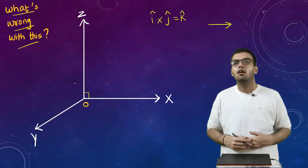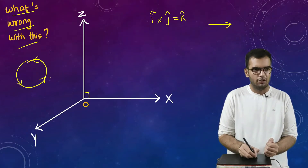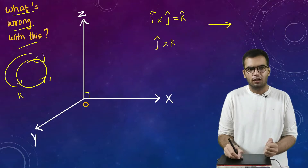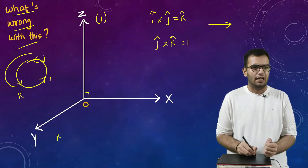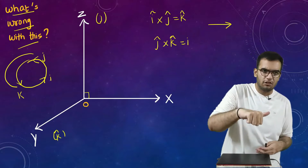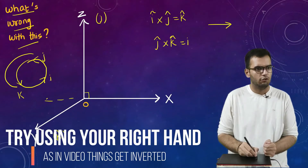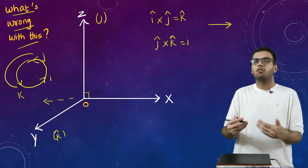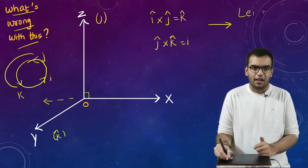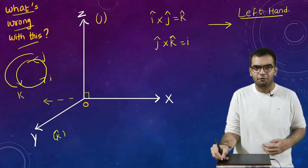Similarly, in the way we draw in India — i, j, k — if I take j-cap cross k-cap, it should give me i-cap. So this is my j-cap, this is my k-cap. Going in this direction, i-cap should point this way, meaning the x-axis should be in this direction — but it is not. So coordinate systems that do not obey the right-hand thumb rule are called left-handed coordinate systems. The coordinate system I have drawn here is a left-handed coordinate system.